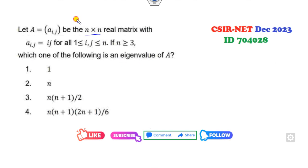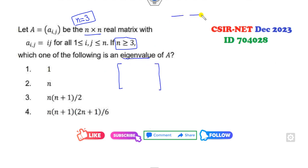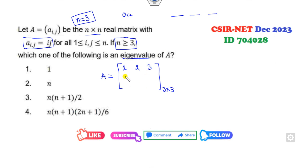Look at this next problem. I can always choose a particular value of n, and the minimum value here is 3. So I can choose n = 3, and then we need to find which of the following are eigenvalues. With n = 3, we have 3 eigenvalues. The elements of matrix A are given by A_ij = i × j. So the matrix is: 1, 2, 3 / 2, 4, 6 / 3, 6, 9.